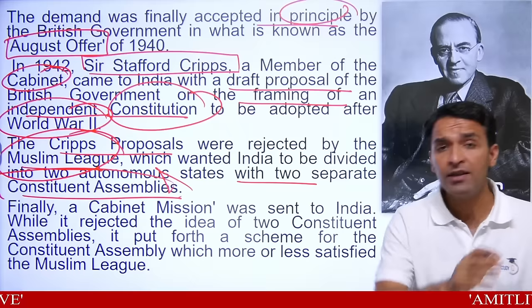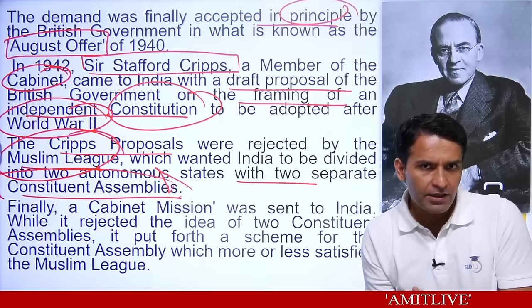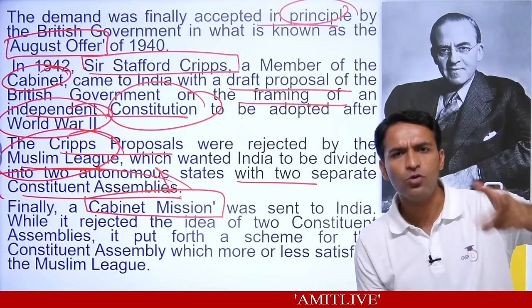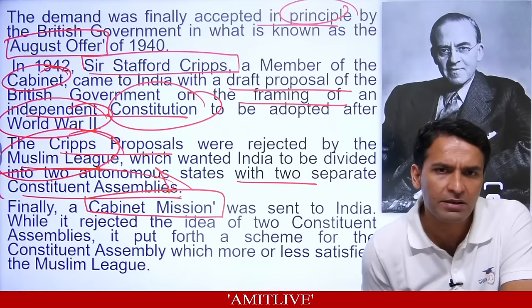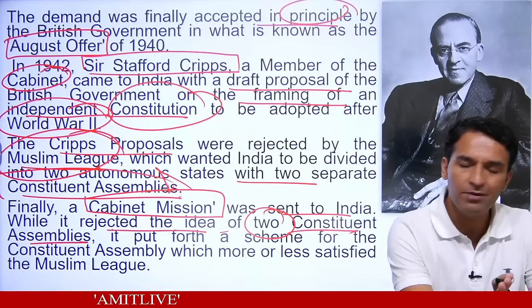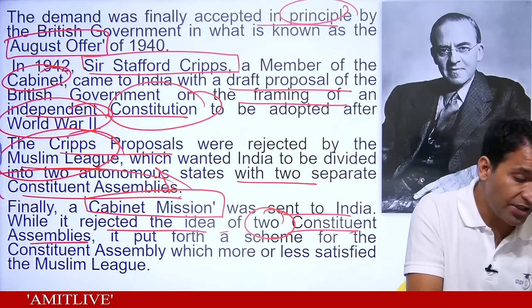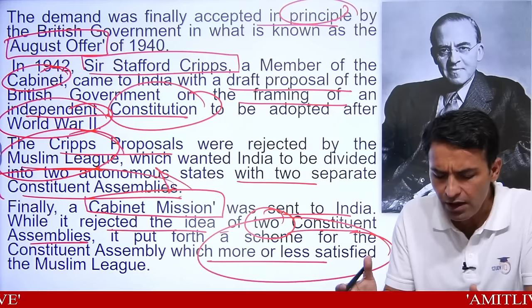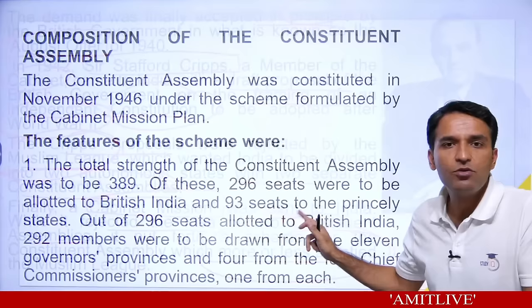Previously Cripps had come alone; this time there were A.V. Alexander, Pethick Lawrence, and Sir Stafford Cripps — all three cabinet members, hence called the Cabinet Mission. They came to India, rejected the idea of two constituent assemblies, but put forward a basic idea that satisfied both Congress and Muslim League. For historical reasons, both the Indian National Congress and Muslim League agreed.